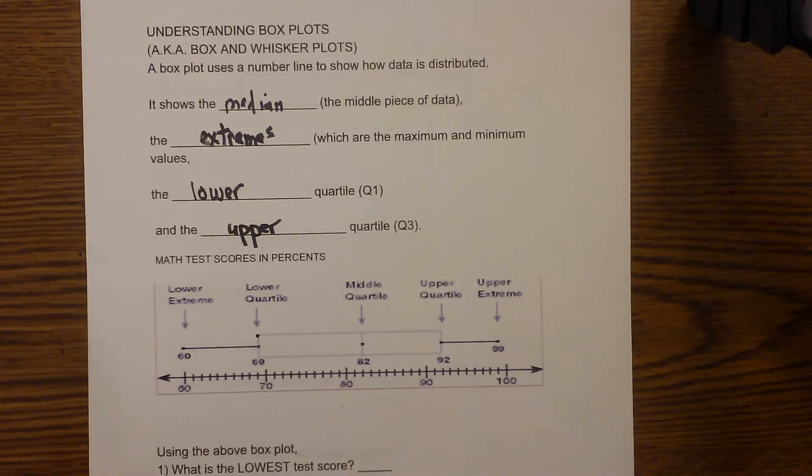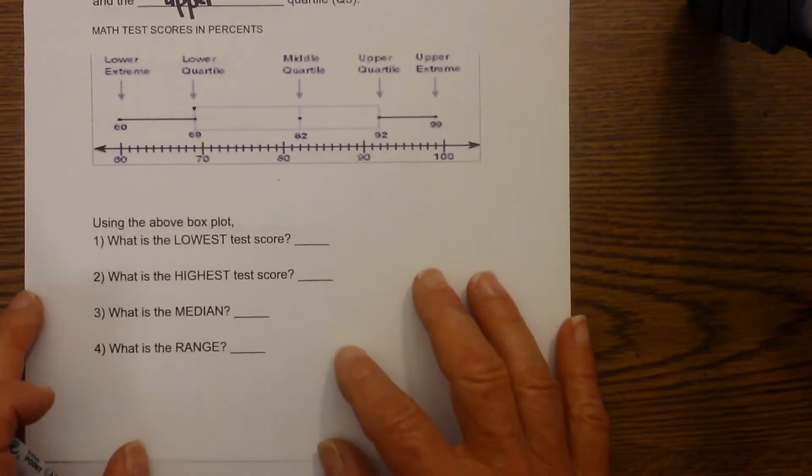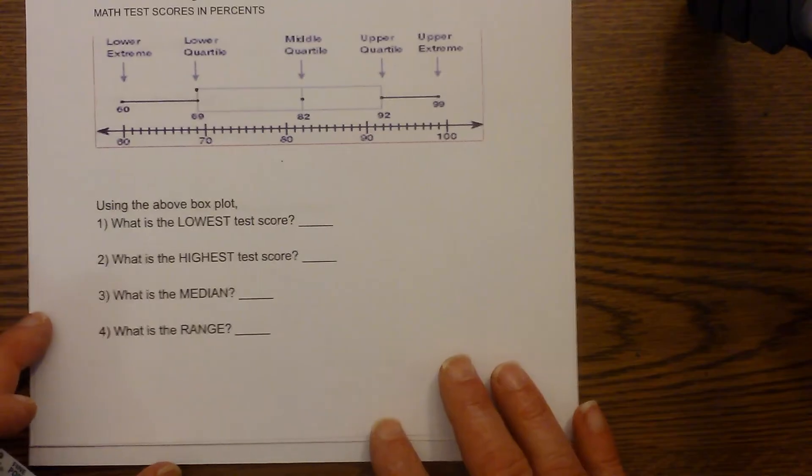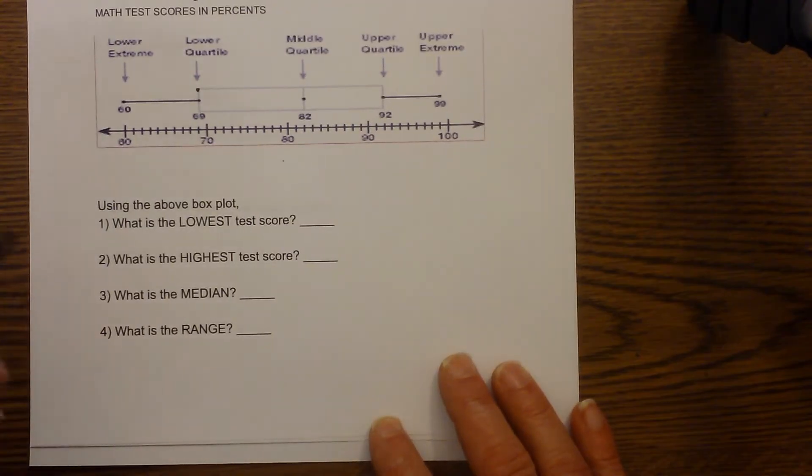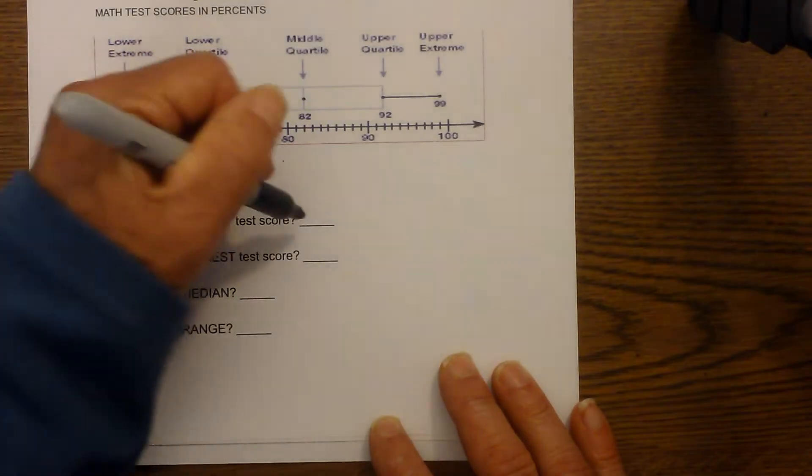Okay, so there's kind of an outline, and so sometimes you'll have questions such as these. So let's look at the box and whisker and see if we can't figure this out. First, what would be the lowest test score? Well, if we look at the two extremes, the lowest would be 60.